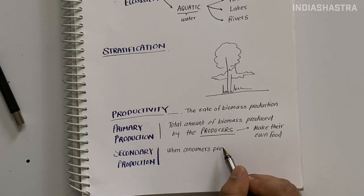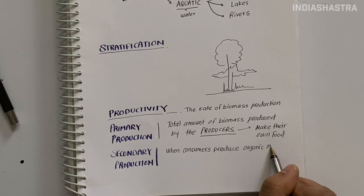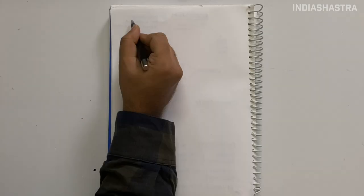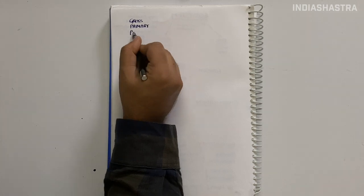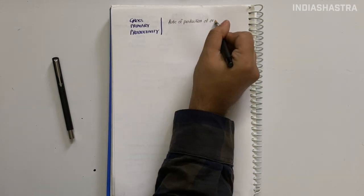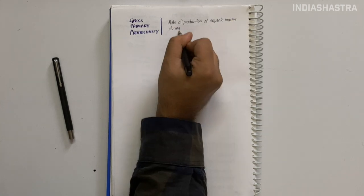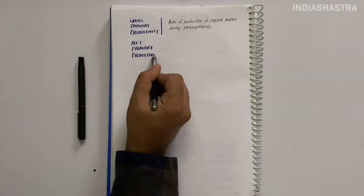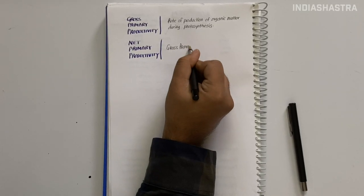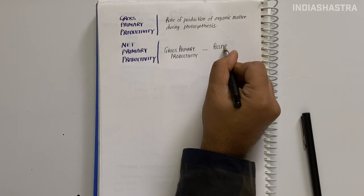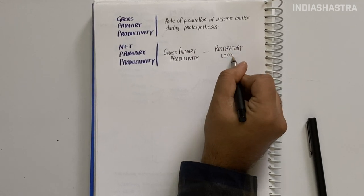Gross primary productivity is the rate of production of organic matter during photosynthesis in an ecosystem. For photosynthesis, we require solar energy. Net primary productivity - NPP is gross primary productivity minus respiratory losses. Like in economy, gross means the total amount of something, whereas net means what remains after certain deductions. For example, NDP equals GDP minus depreciation from capital goods. So NPP equals gross primary productivity minus respiratory losses.